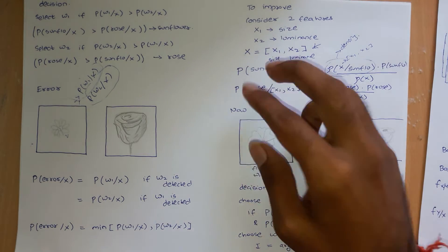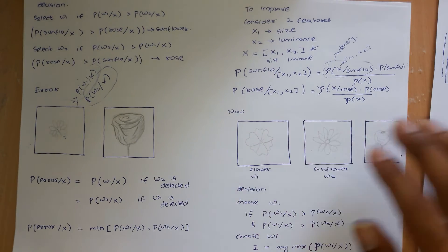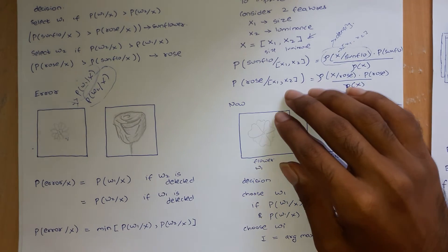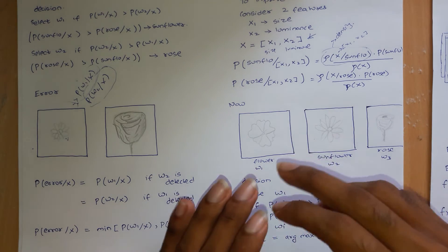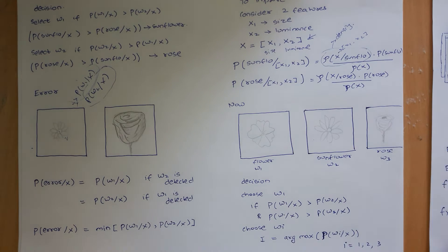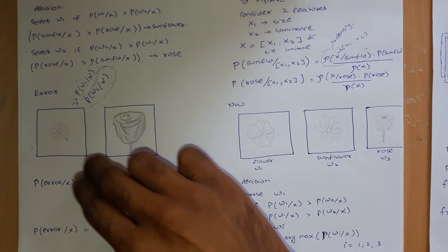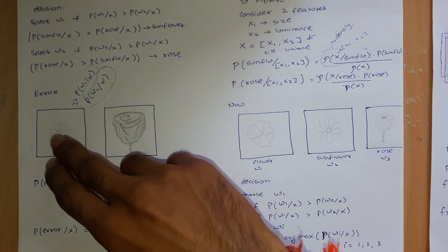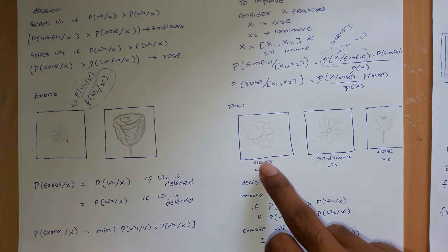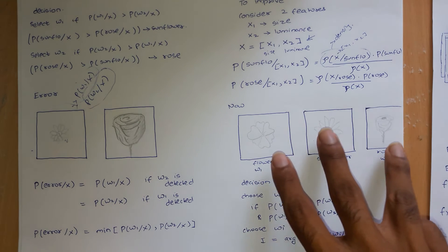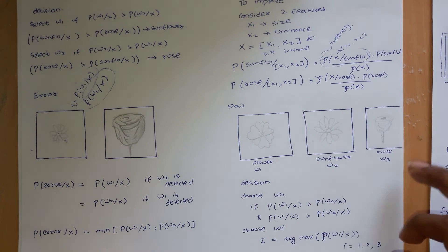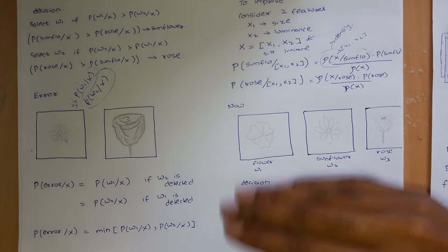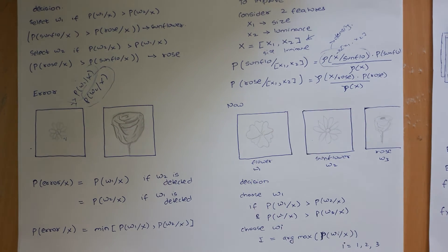In the next video we will see how to implement this for more than two classes. Right now we have seen two classes — sunflower and rose. Next, we will introduce three or more flowers and see how the algorithm works with that kind of data. Thank you for watching — stay tuned for further videos.